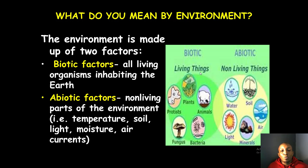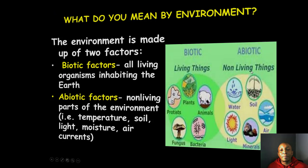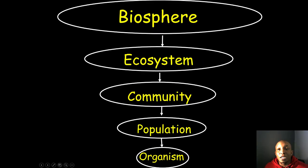Second, we have abiotic factors, which are the non-living parts of the environment — for example, temperature, soil, light, moisture, air, and currents, as well as water, minerals, and light. So the difference between living and non-living: biotic factors are the living things in the environment, and abiotic factors are the non-living things.